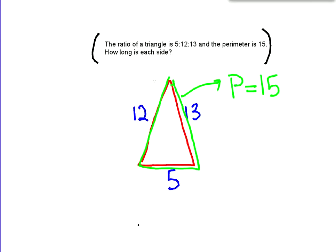So we know that all three sides equal 15, so we know that all three sides added together, 5 plus 12 plus 13, equals 15.